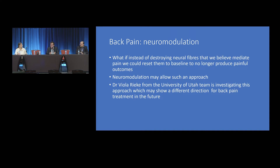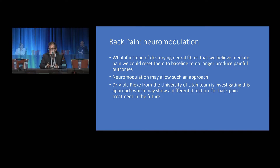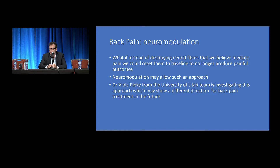HIFU is the only ablation technique that allows targeting the facet joints directly. Historically, in the literature for RFA, the nerve is always targeted because there's not much anatomical variation — you place a needle parallel to it, ablate it, and get six to twelve months of pain improvement. The problem with ablating the nerve for facet joint pain is that it provides only temporary pain relief, during which patients are supposed to do physiotherapy to improve back muscle strength.